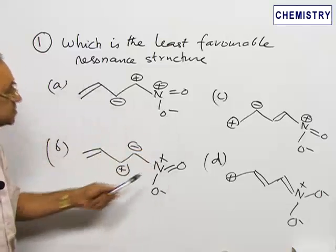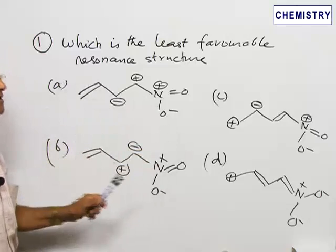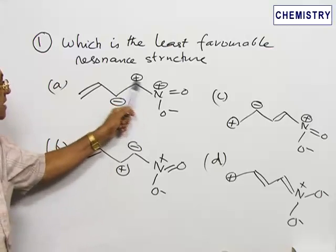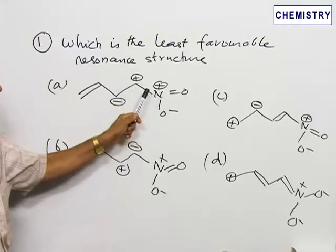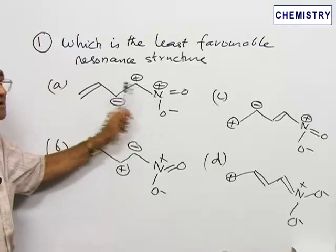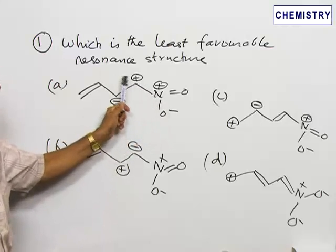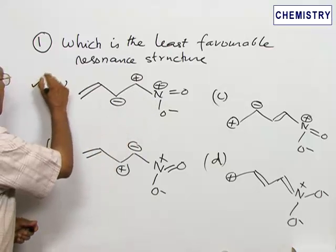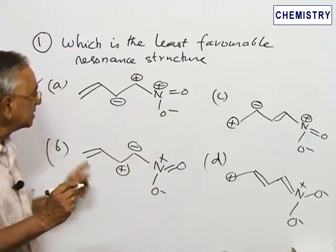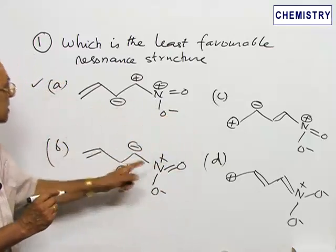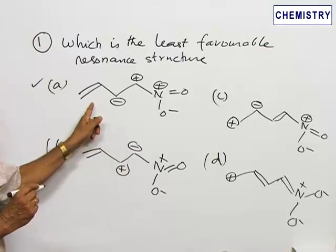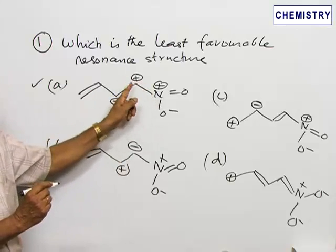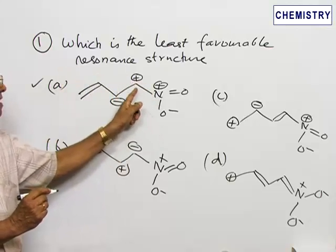But among these charged structures which is least favorable? One structure where the structure is least favorable is two similar charges are on adjacent atoms. This is carbon, this is nitrogen, like charges are present in regional positions or on adjacent atoms. Therefore, such structure must be least favorable. Structure A is least favorable even though energetically B, C and D are fairly high, but among them the one which is least favorable is this A because the two similar charges, like charges, positive charges are present in adjacent positions.